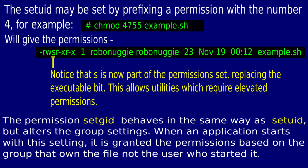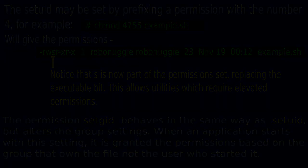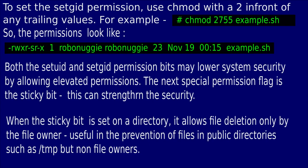This allows utilities which require elevated permissions to do their thing. The permission set GID behaves in the same way as set UID, but alters the group settings. When an application starts with this setting, it is granted permissions based on the group that owns the file, not the user that started it. To set the GID permission, use chmod with a 2 in front of any trailing values, as in the example.